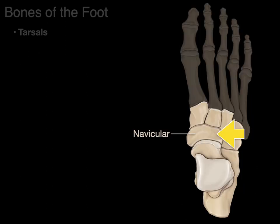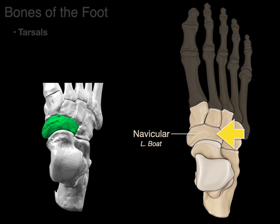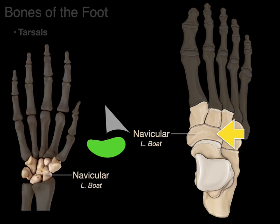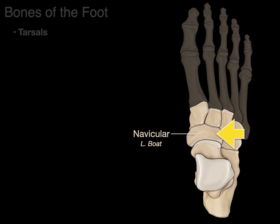Next is the navicular, which articulates posteriorly with the calcaneus and the talus, and anteriorly with the cuneiform bones. It is Latin for boat, because if you look at it and turn it around, it kind of looks like an upside-down boat. You may remember from the carpal bones that there's another bone in the wrist also called navicular. Anatomists decided they couldn't have two navicular bones, so the one in the wrist was renamed scaphoid — Greek for boat — while navicular, Latin for boat, remained in the foot.